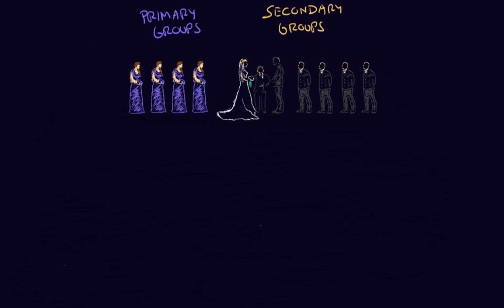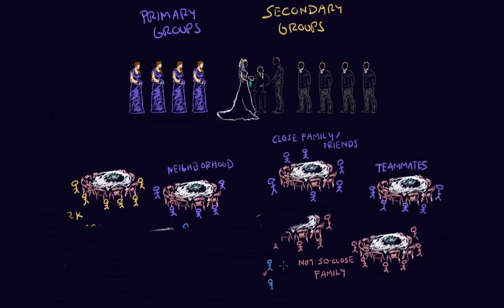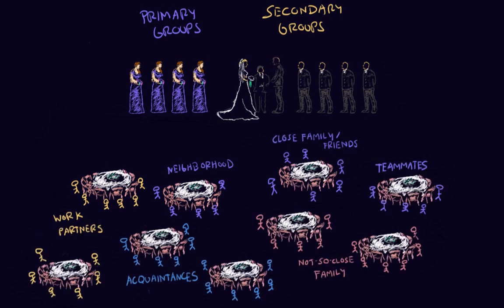Now the wedding is over — let's head to the reception to look at some different primary and secondary groups. The bride and groom sit with their bridal party: the close friends they have known for a very long time and close family. Let's say the groom played football in college and a lot of his teammates are attending the wedding. They sit close to him because they are in his primary group — they put countless hours into practicing with each other and really grew up together in college. We may also have the bride and groom's immediate family, like their brothers and sisters and moms and dads.